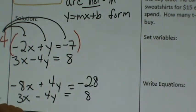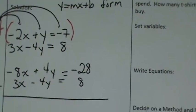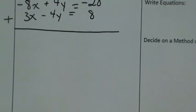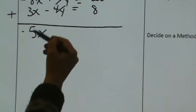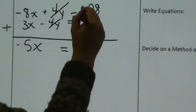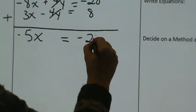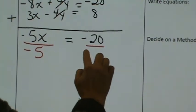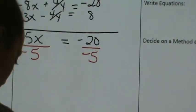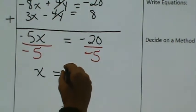Now we add those two equations together. Negative 8 plus 3x is a negative 5x. Look at what happens to the y's — they're eliminated. Negative 28 plus 8 gives us negative 20. So now I divide by negative 5 and I'm left with x equals 4.